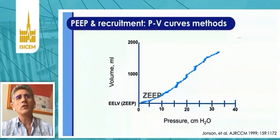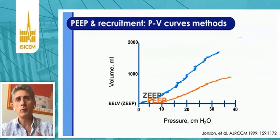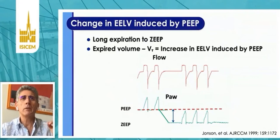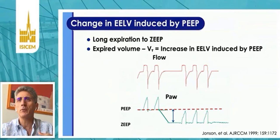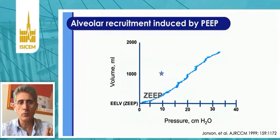We've known for a long time that we can perform low-flow inflation PV curves. If you start by doing a low-flow inflation PV curve with ZEEP, you obtain a baseline curve, and then you can repeat the measurement with a PEEP of, for instance, 10. You then assess how much air remains in the lung at PEEP 10 by performing a long expiration to ZEEP — the difference between the expired volume and the tidal volume represents the increase in end-expiratory lung volume induced by PEEP. You can superimpose these two PV curves and assess the recruited volume.